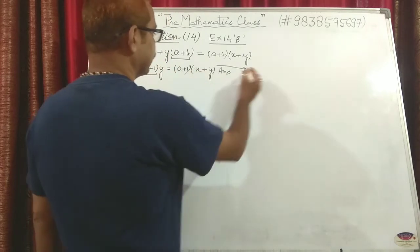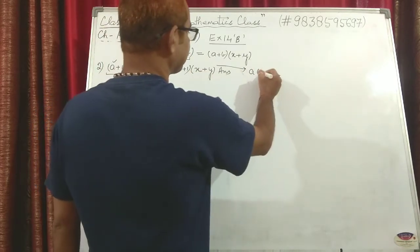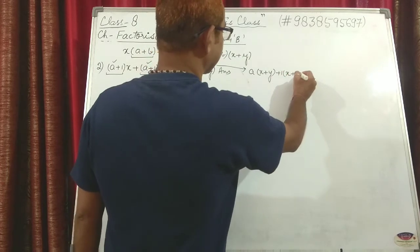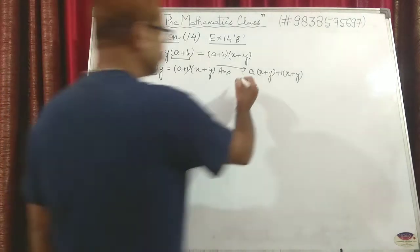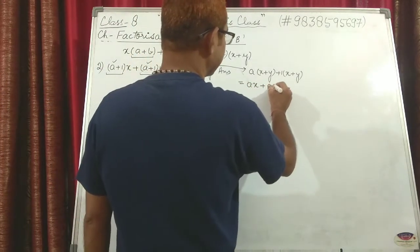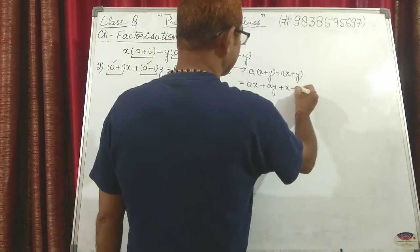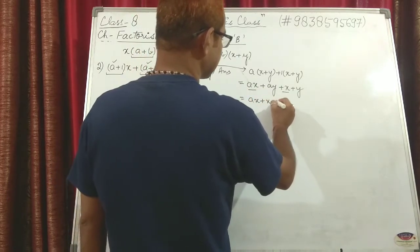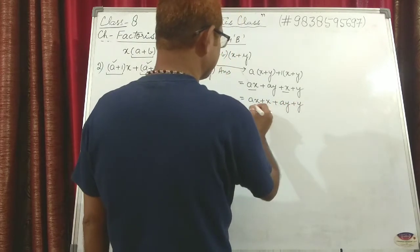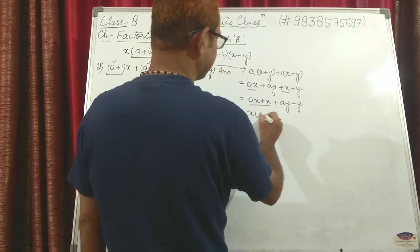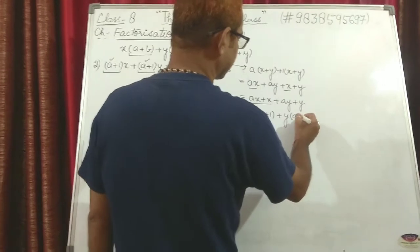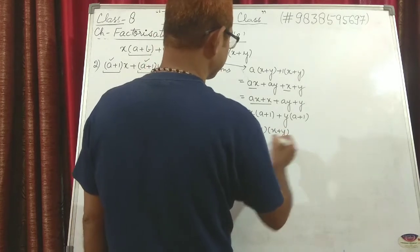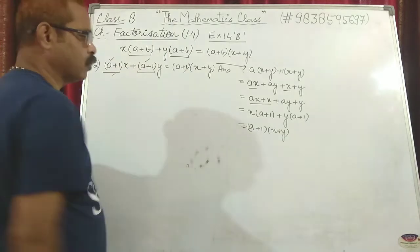If you solve this again: (a+1)(x+y) expands to a(x+y) + 1(x+y), which gives ax + ay + x + y. Rearranging: ax + x + ay + y. From the first pair take x common, leaving (a+1); from the second pair take y common, leaving (a+1). Then (a+1) is common again, and you get (a+1)(x+y) — the same result.